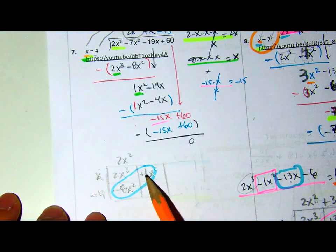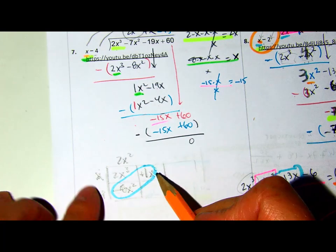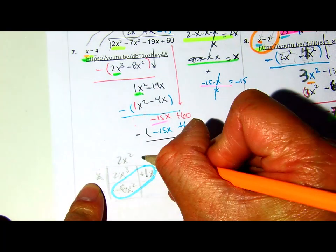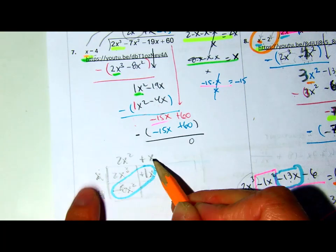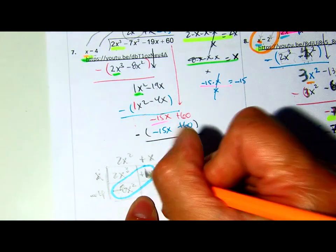Right? Because that's negative 8 plus 1 is negative 7. So, then what goes up here, this would be an x. So, x times x is x squared. x times negative 4 is negative 4x.